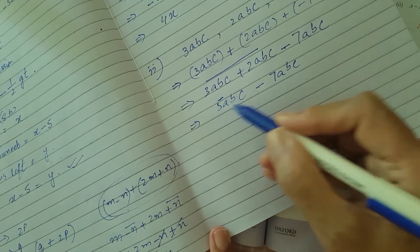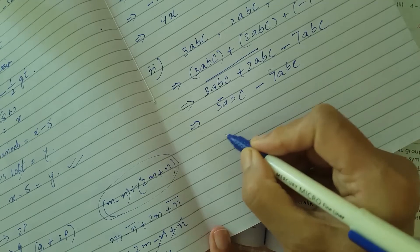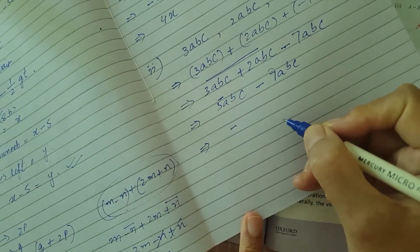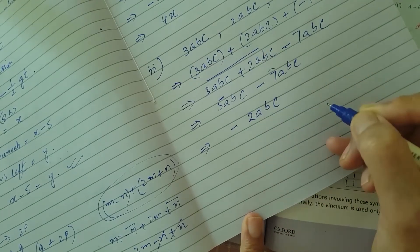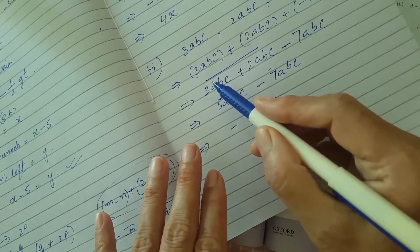7 minus 5 is 2, and the greater number is 7. Because of this coefficient, we will put the sign of negative with 2ABC which is left over. So now you added up all three given expressions.